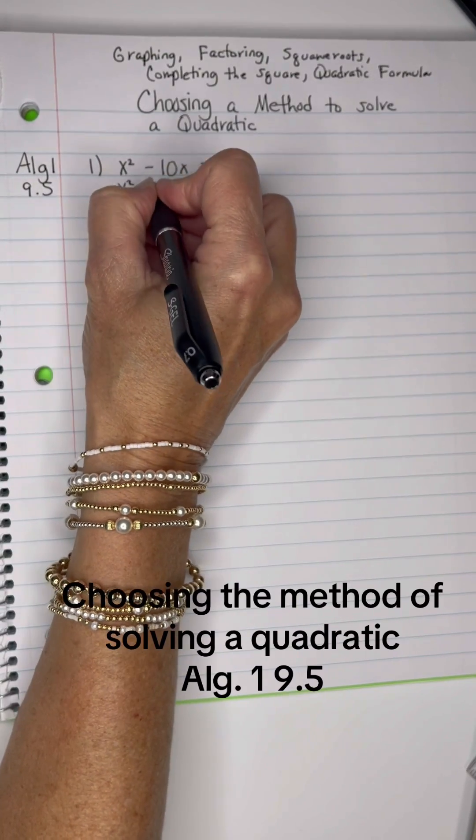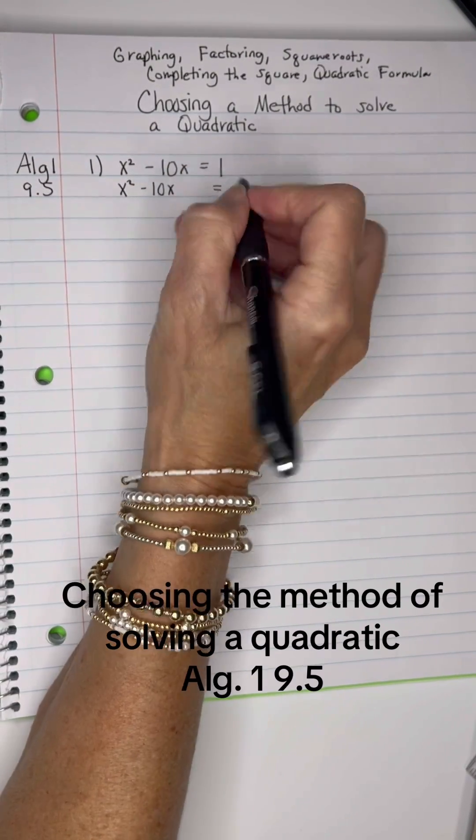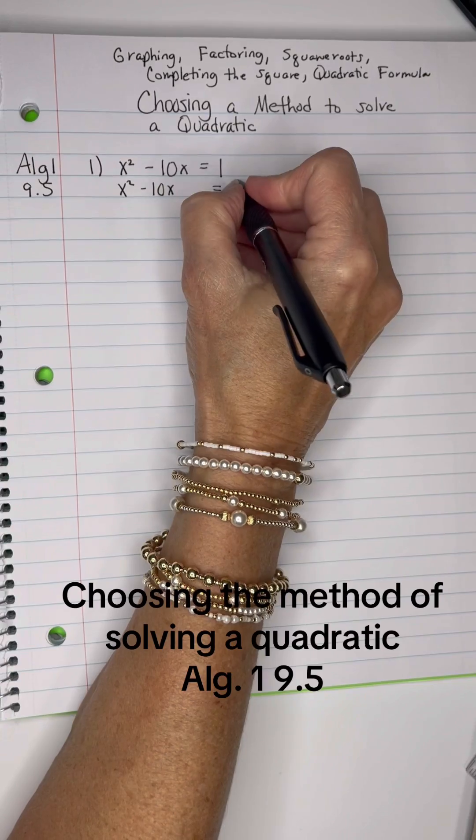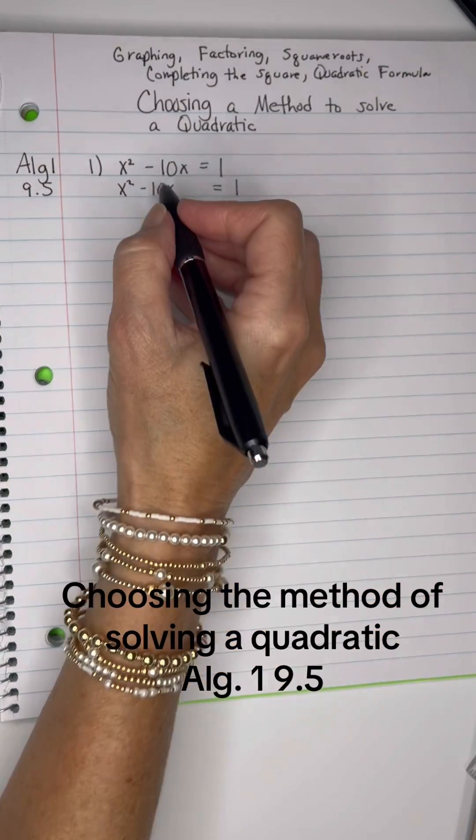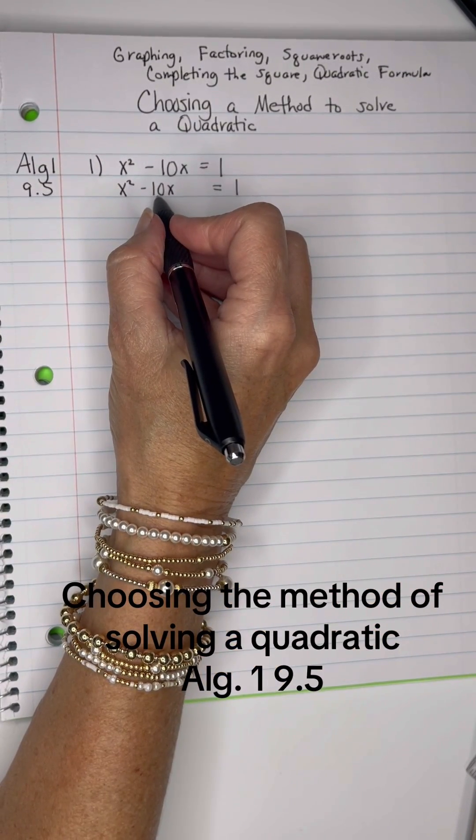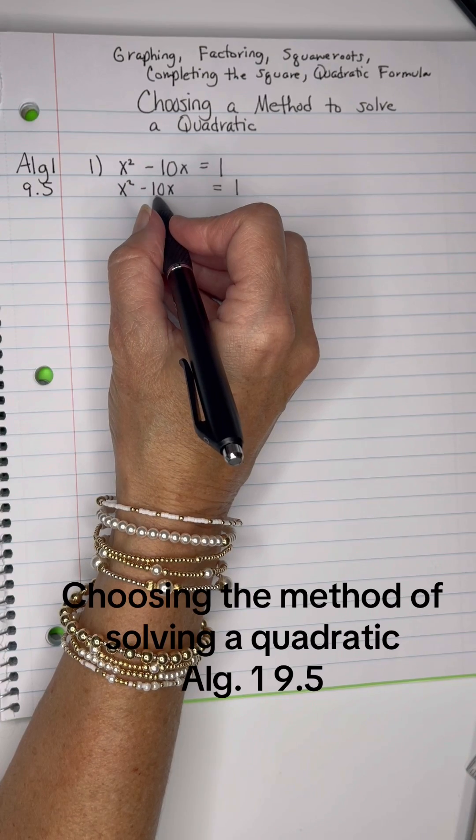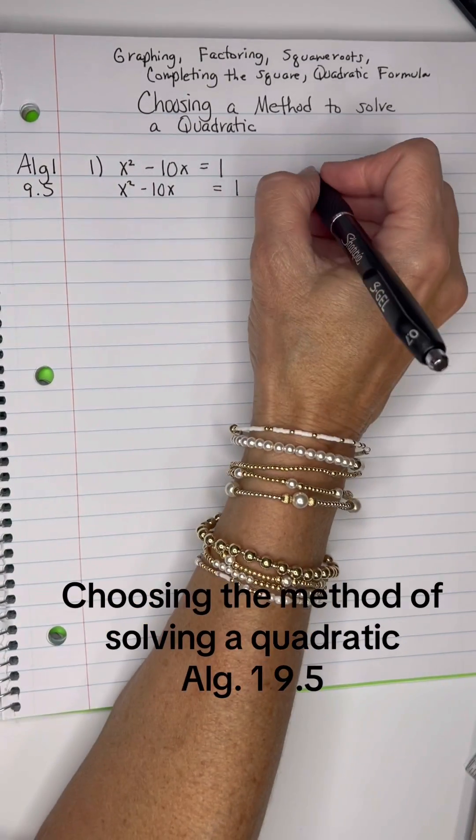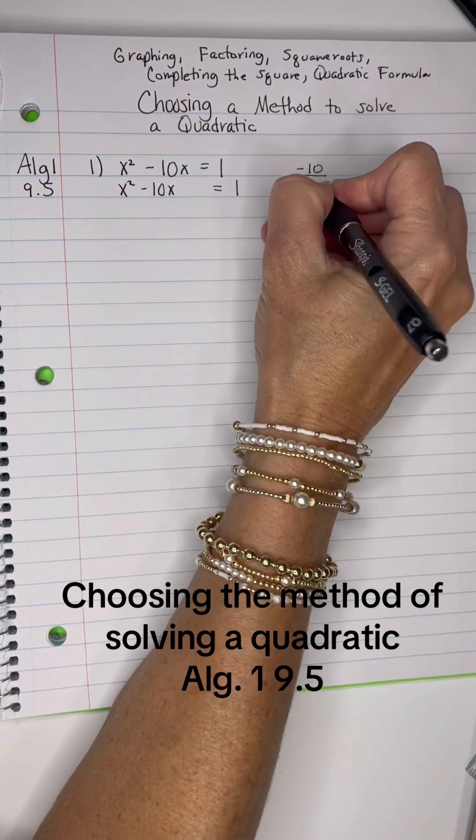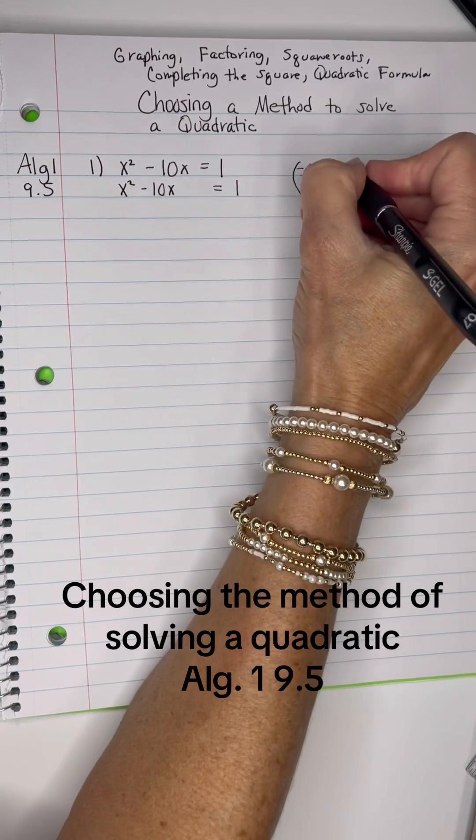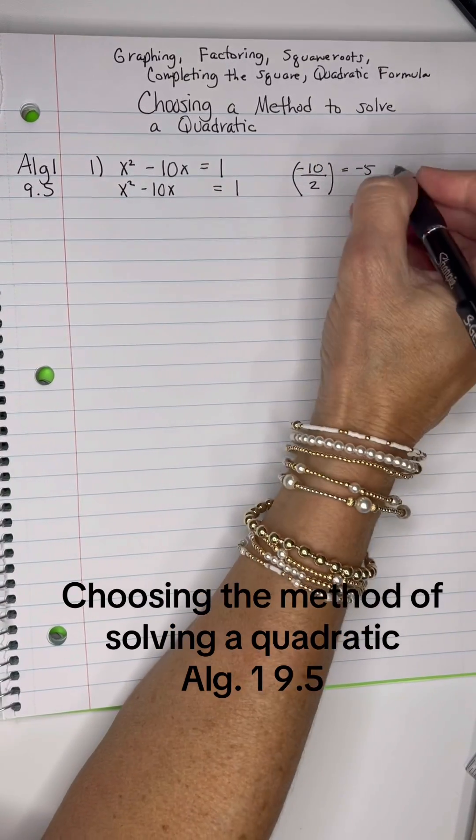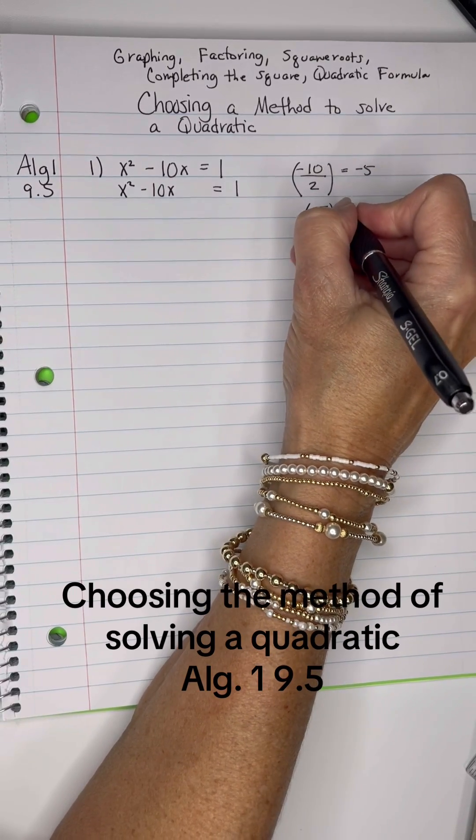I'm going to take x² - 10x, leave a spot for a C, and then write that 1 down. Now to complete the square, we have to find, we have to take this B and find the C. We do so by taking the -10 and halving it, and getting a -5, and then taking the -5 and squaring it.